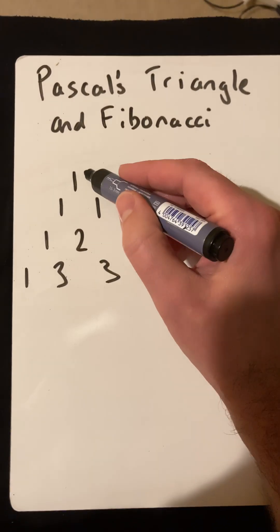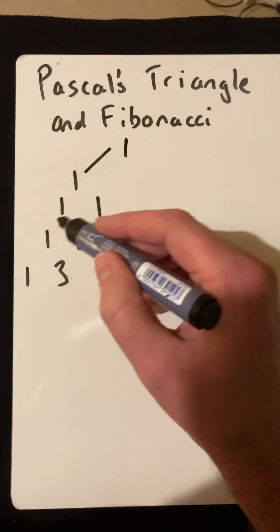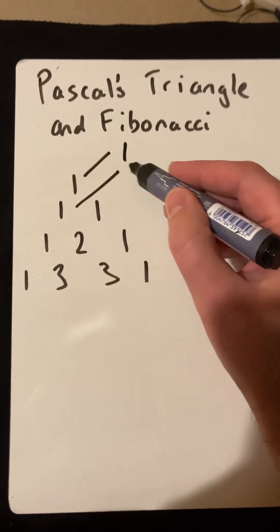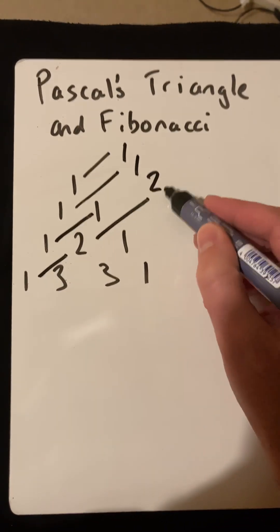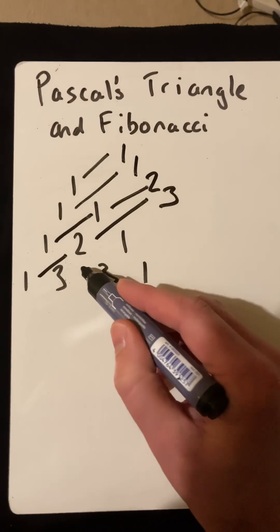But what we might not have seen is 1 there, and so if you catch a diagonal line up there, you'll get the Fibonacci numbers.